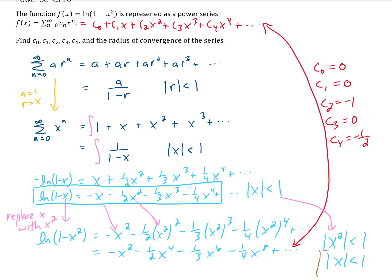Therefore, our interval of convergence goes from negative 1 to 1. The radius of convergence is half of the length of the interval of convergence. Since our interval goes from negative 1 to positive 1, its length is 2, and half of that is our radius, which is 1.